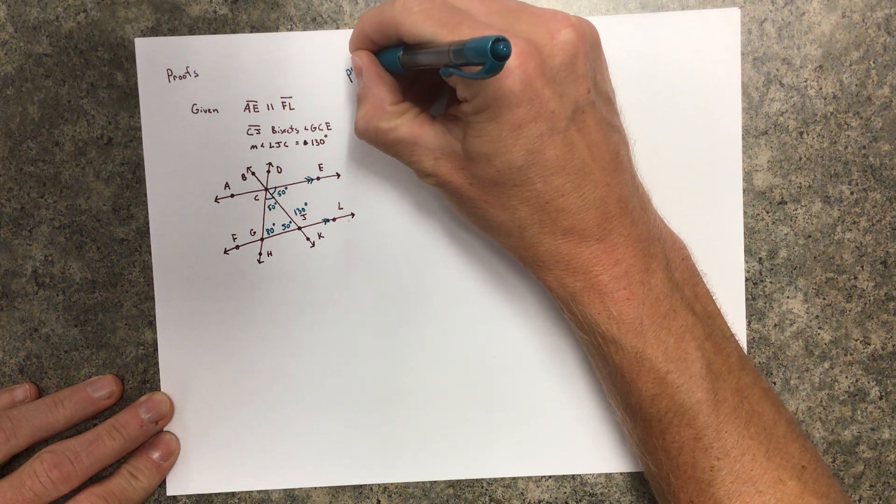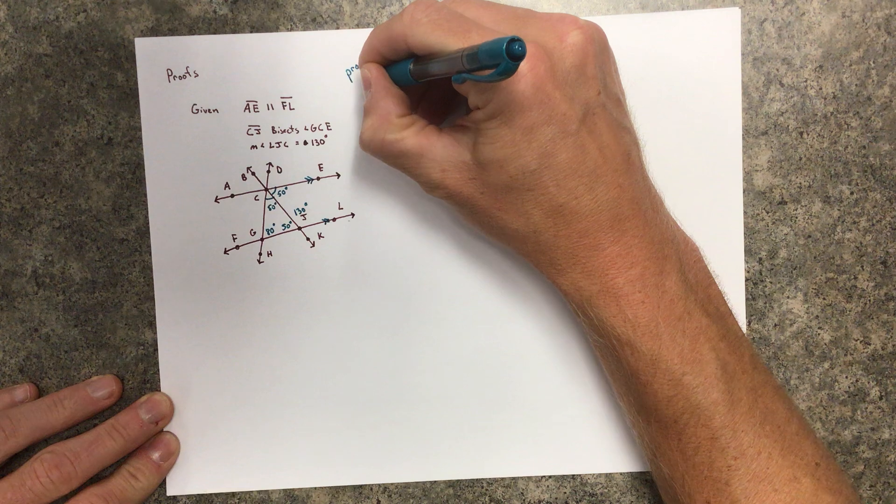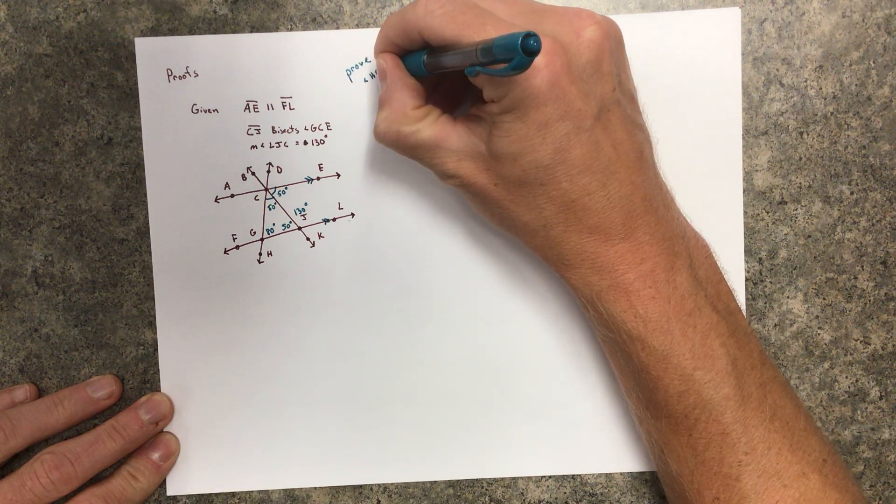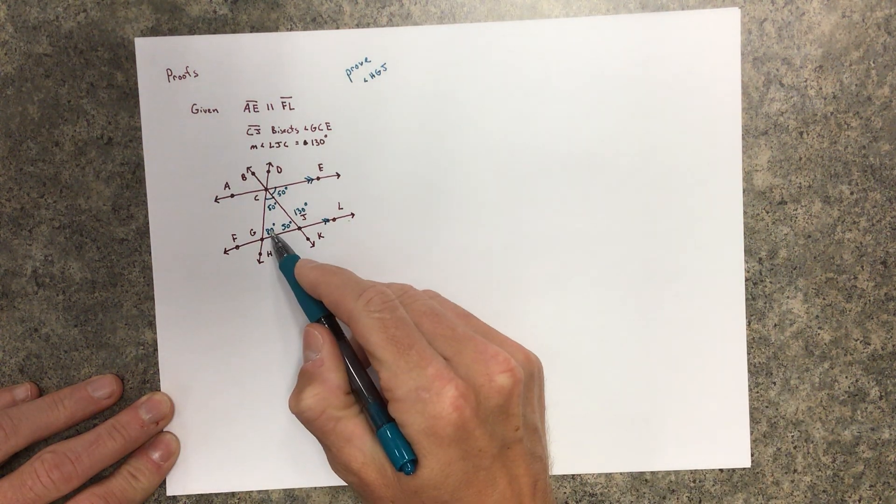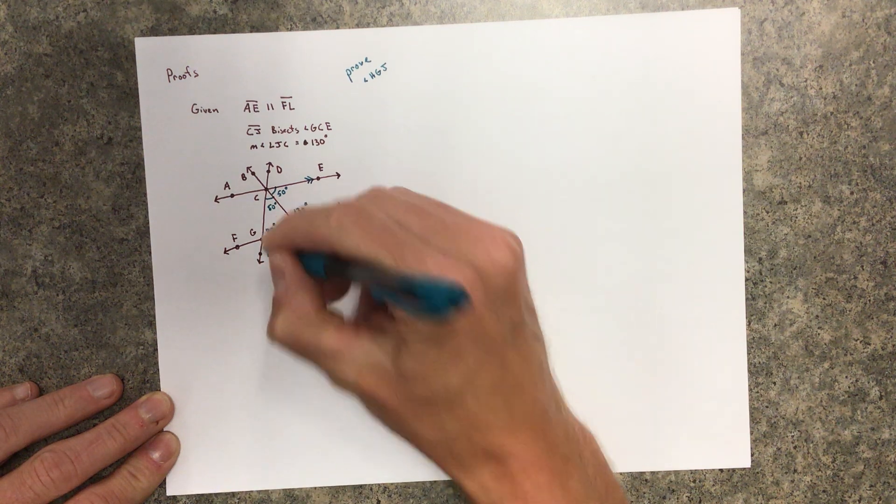Our proof actually, kind of important, right? We wanted to find slash prove the measure of HGJ. Once we knew that this is 80, then we know this is 100 because of a linear pair.